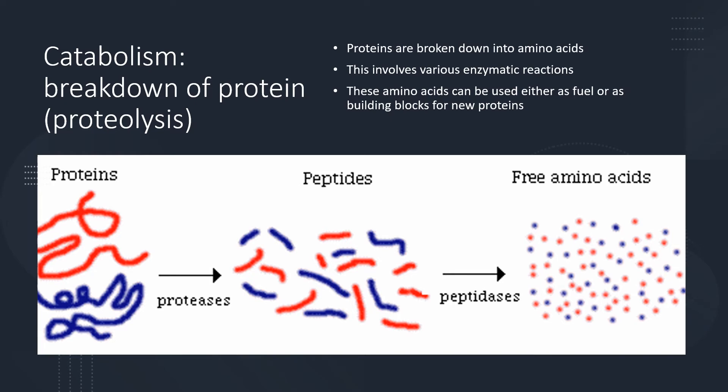Now let's talk about proteolysis, which is the breakdown of protein. Proteins are broken down into amino acids, and this involves a variety of enzymatic reactions. The amino acids yielded from protein can be used either as fuel or as building blocks for new proteins. This picture nicely demonstrates, although in a pretty oversimplified fashion, how proteins are eventually broken down into amino acids.